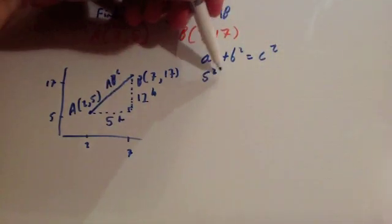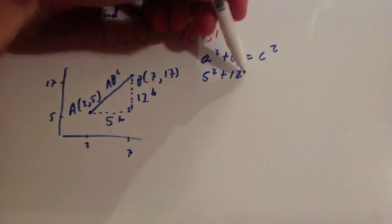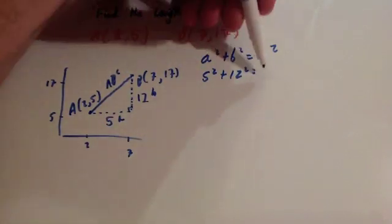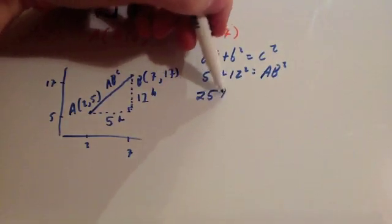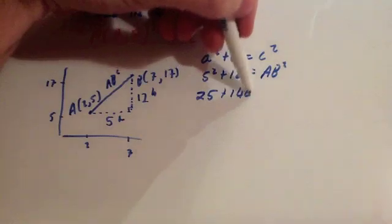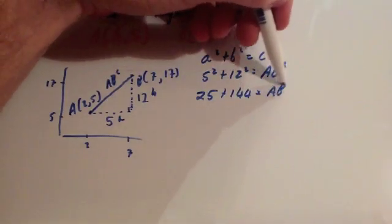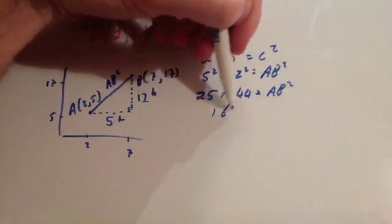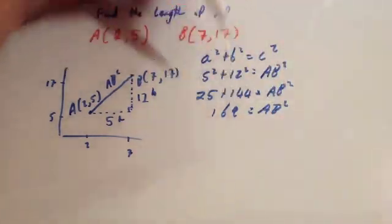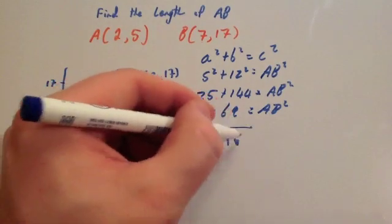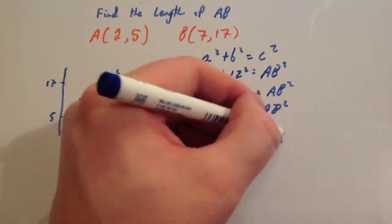A squared, so 5 squared plus 12 squared equals AB squared. When you square the 5 and the 12, you're going to get 25 plus 144 equals AB squared. So 169 equals AB squared when you add them together, and then square root it. So square root of 169 equals 13.